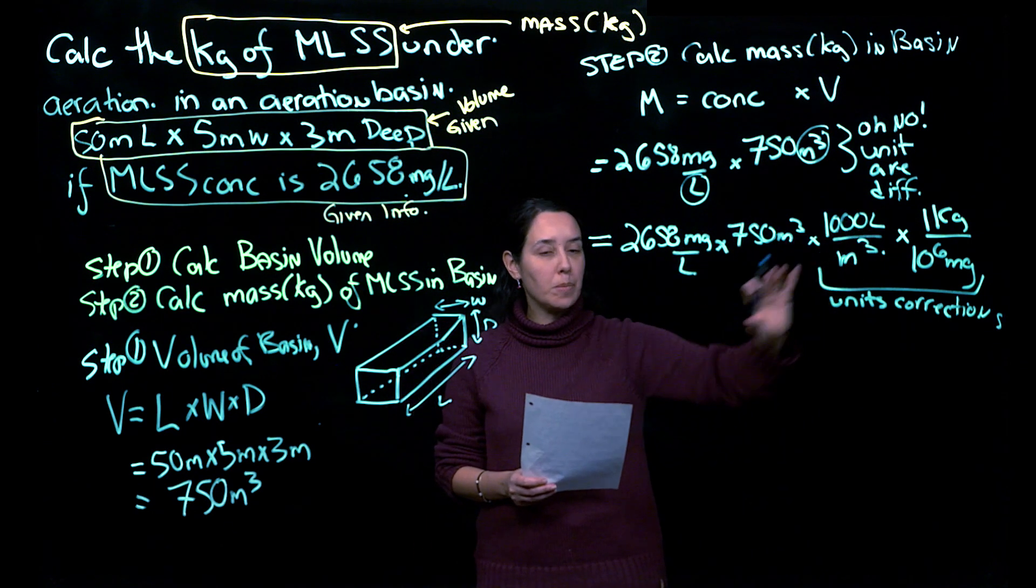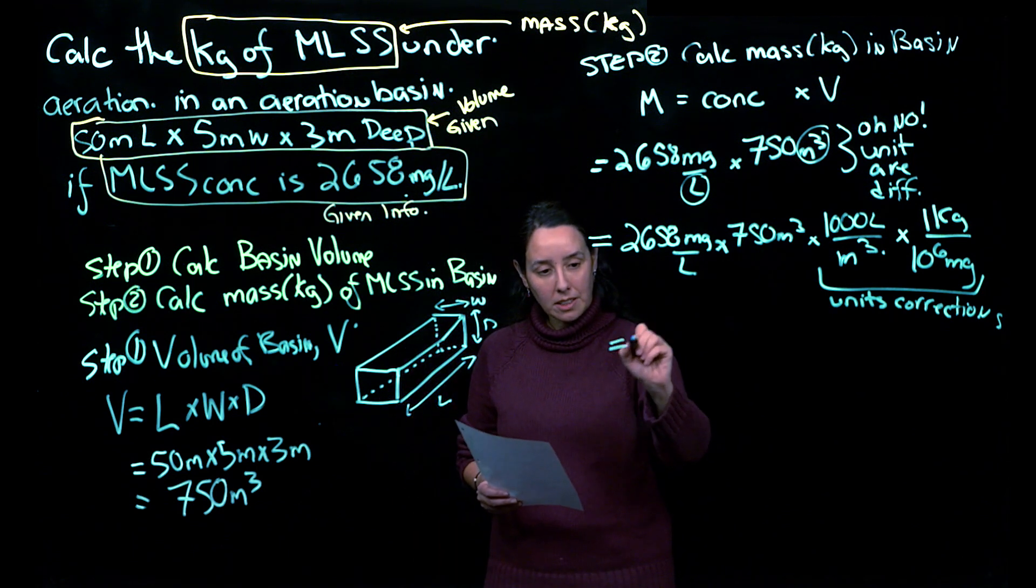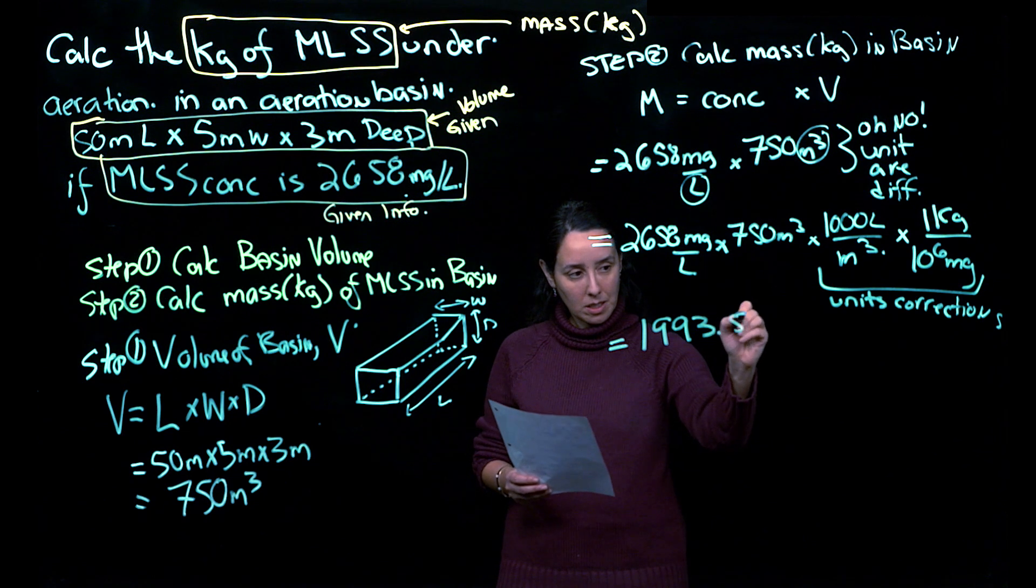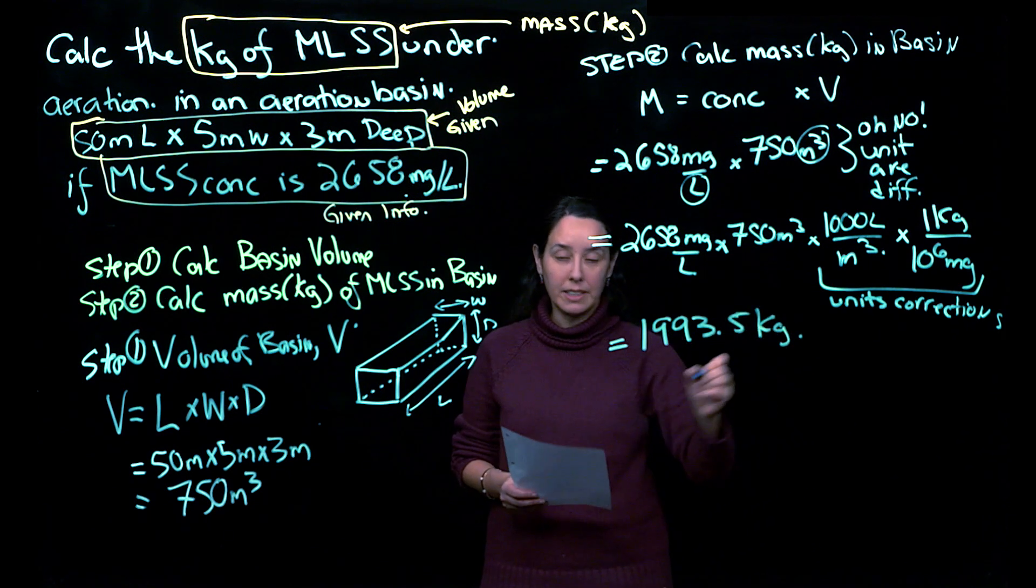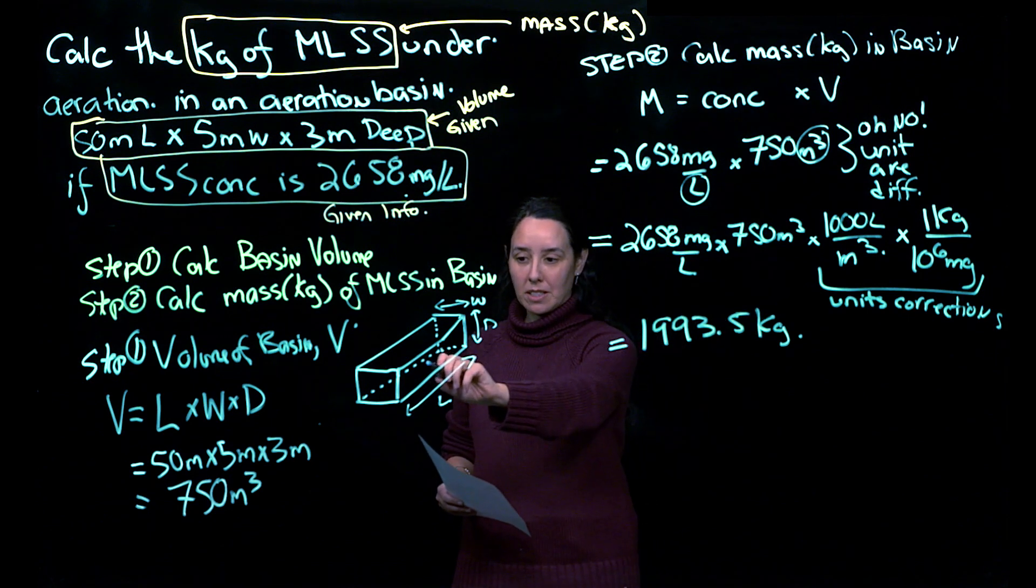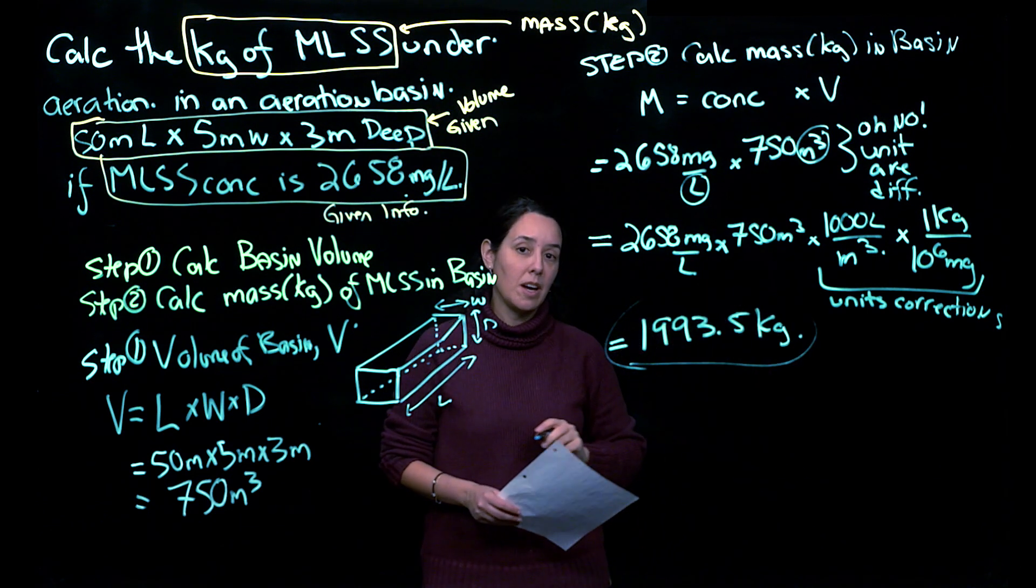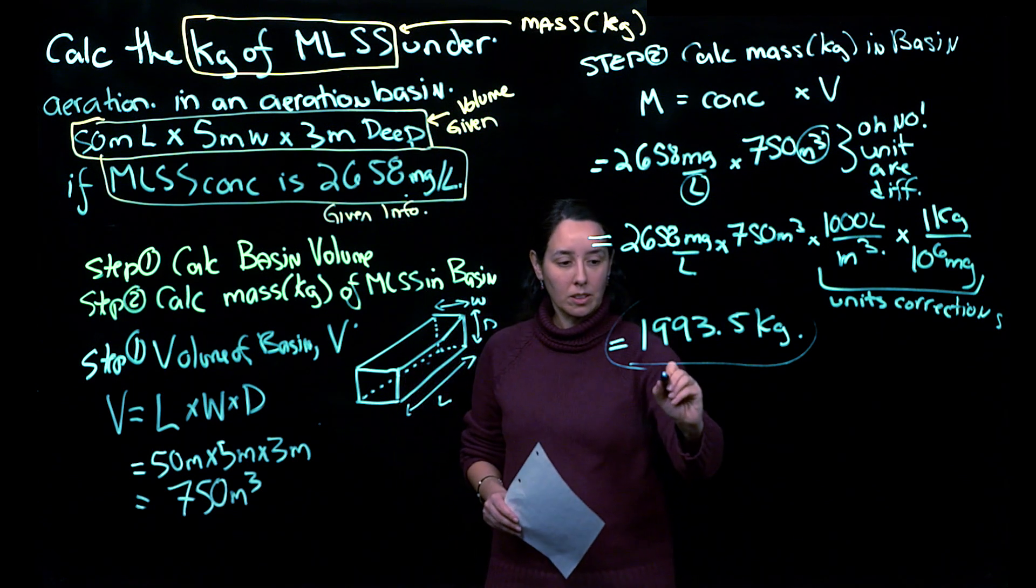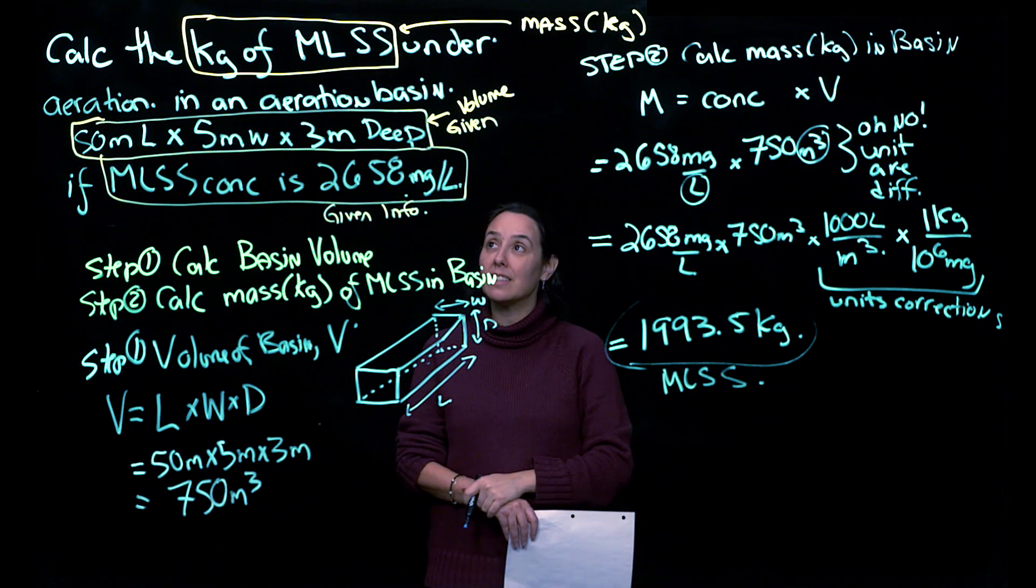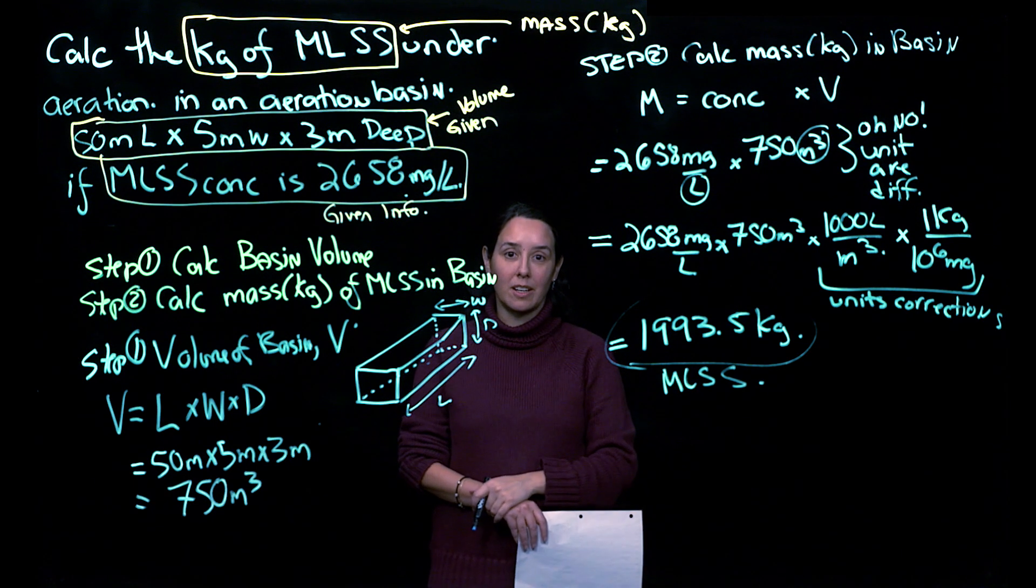So once you multiply out all of those together, you should get 1993.5 kilograms. So again, what that means is in this basin here, is this much mixed liquor suspended solids. So this is the MLSS. Okay, and that is our multi-step calculation to find solids in an aeration basin.